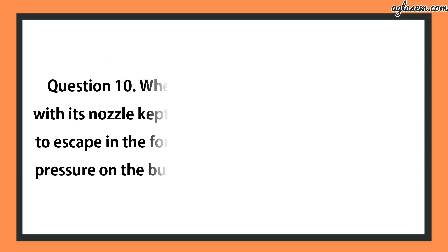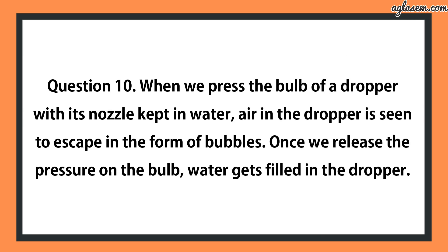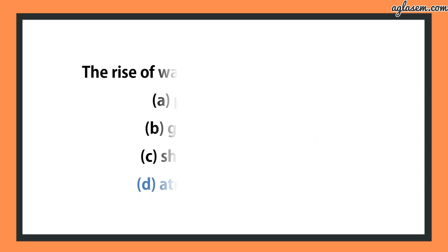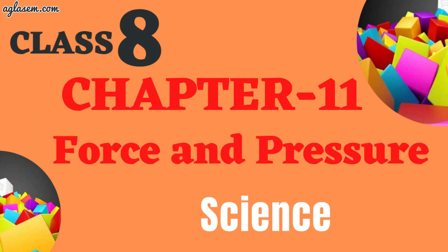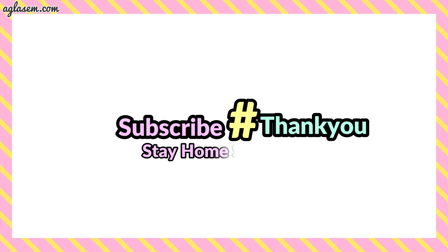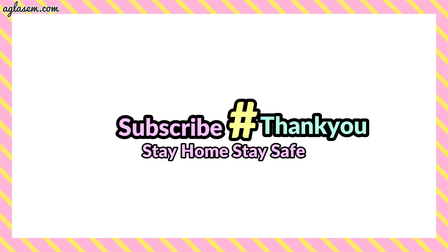Question number 10: When we press the bulb of a dropper with its nozzle in water, air escapes as bubbles. Once we release the pressure, water fills the dropper. The rise of water is due to — fourth option — atmospheric pressure. I have covered all the questions of this chapter. If you have any query or doubt, please put it in the comment section below. For more NCERT solutions, keep watching and subscribe to channel Agla Same Schools. Do not forget to wear a mask and take good care of your health.